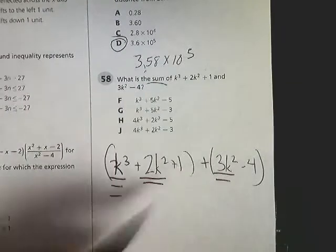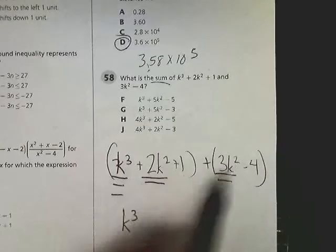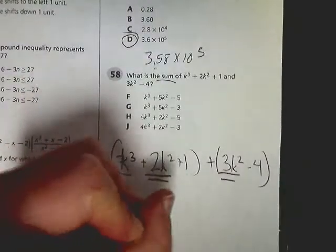Now, I have no more k to the third, so k to the third must be the only one that's there. Then I'm going to combine the two lines, 2 plus 3, so I get 5k squared.